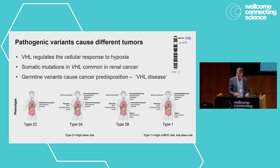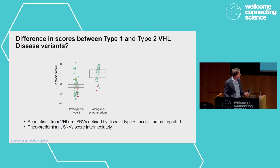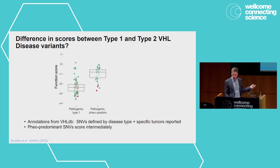Coming back to the question I started with: how do different variants lead to different types of VHL disease? We scraped annotations from the VHL database — a combination of clinical data, literature reports, and somatic mutations, not the most well curated. But simply asking whether a SNV was associated with only type 1 phenotype or only type 2 pheo-predominant phenotype, we see a difference in scores. The pheo-predominant variants score greater than minus 1 on average, and pathogenic variants for type 1 score around minus 2.5 on average.